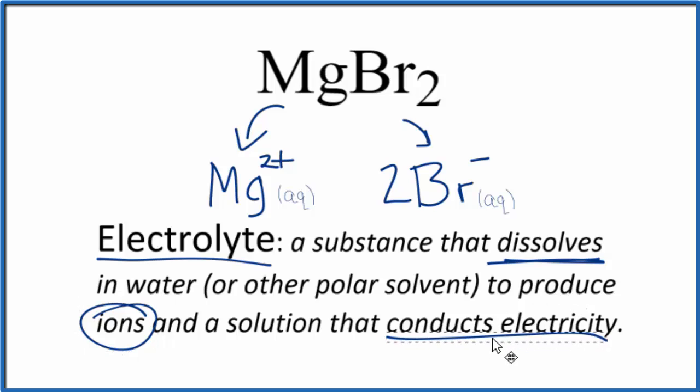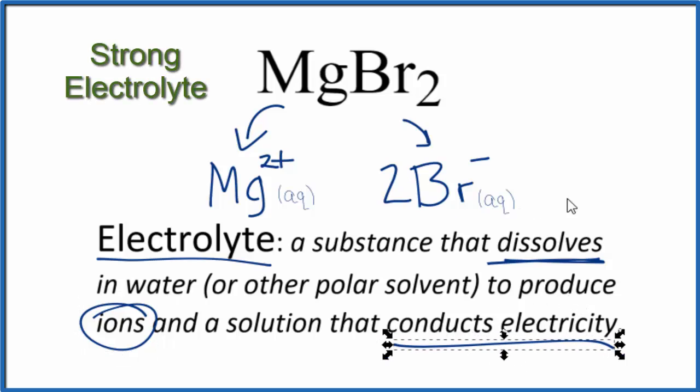In answer to our question, we have an electrolyte here because MgBr2 dissolves and then dissociates into its ions, the Mg2+ and the 2Br- ions. The solution will conduct electricity quite well because this dissociation happens completely. So MgBr2 is a strong electrolyte.